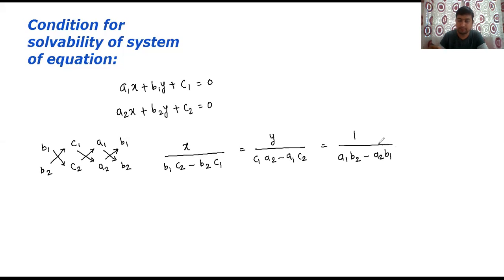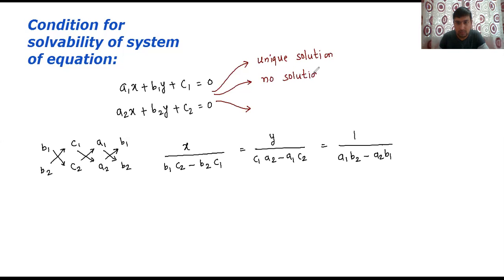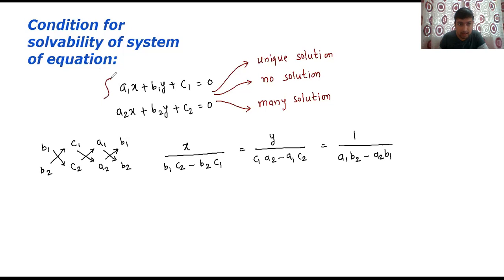Now the given linear equation's solution can have either of these: it can have a unique solution, or it will have no solution, or it will have many solutions. Solution means the values of x and y. This means three conditions are possible. Our topic is: conditions for solvability of a system of equations. We are going to see the condition by which the given linear equation will have unique solution, no solution, or many solutions.